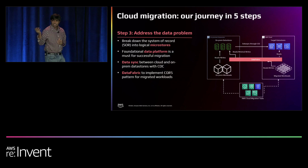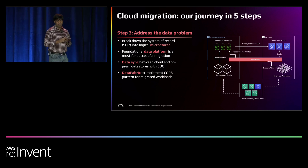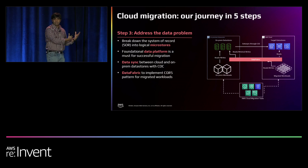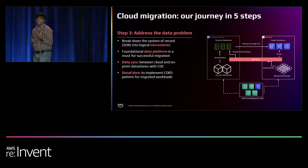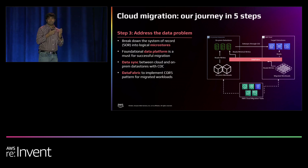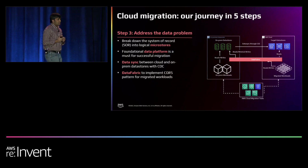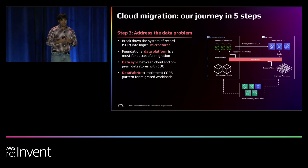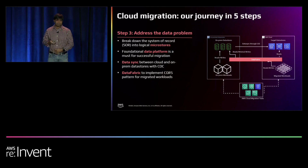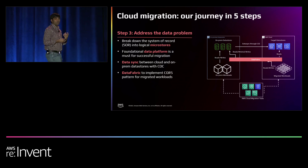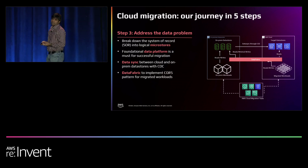Step three is the data aspect — the system of record. You can't take all mainframe data in one go and shift it to the cloud. Gabby talked about one approach: data sync using CDC to capture changes in the monolithic mainframe IMS and move them to the cloud. The second, more innovative access pattern we built is data fabric — a central point to access mainframe data. Data fabric is based on a CQRS pattern where you can request data from mainframe directly, make changes, and query — all routed through this single layer.